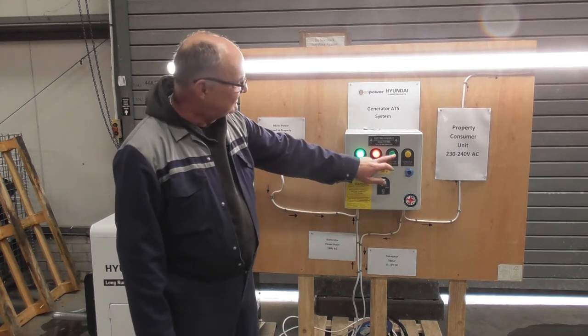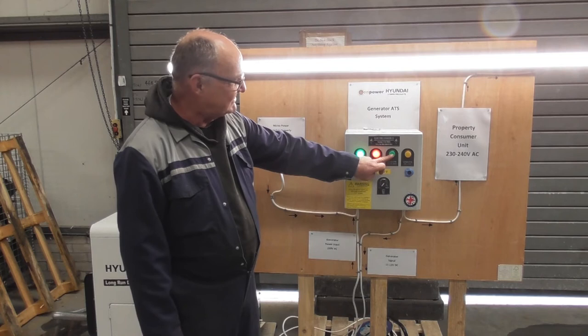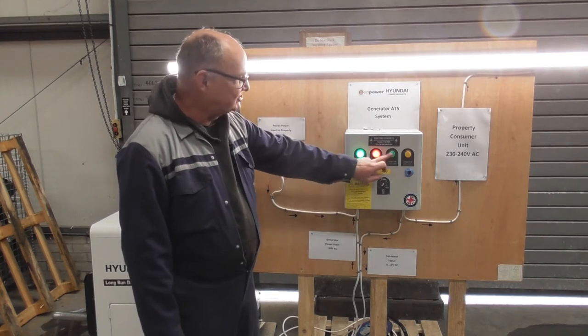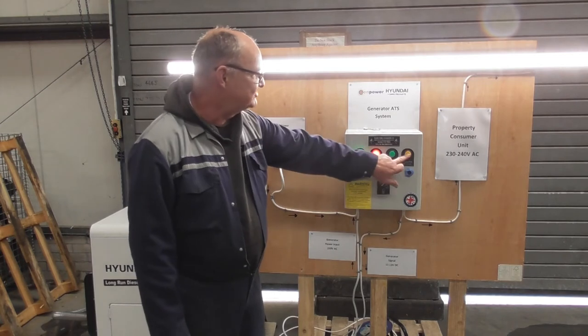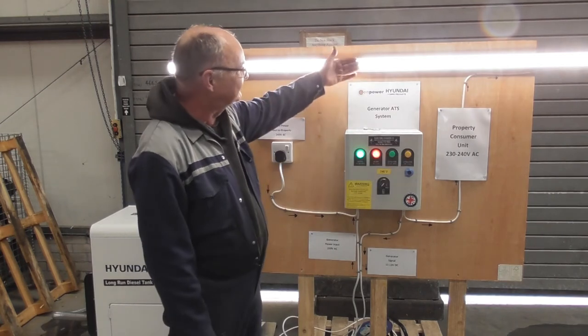Once the generator's started we'll see this green light come on to say the generator's available and then after a short delay period which is built into the unit and can be adjusted, the generator will then take the load and you'll see the light come back on.